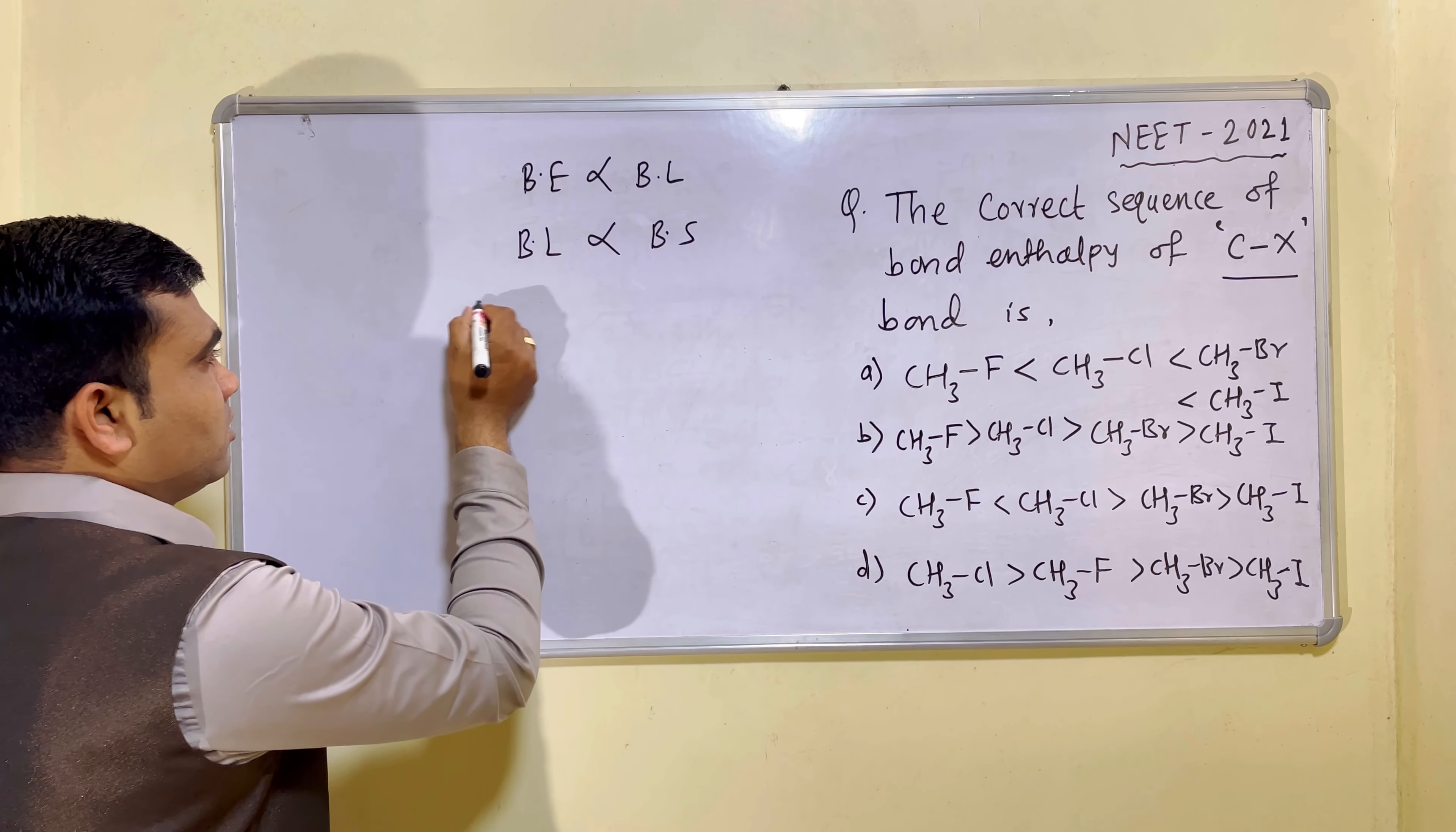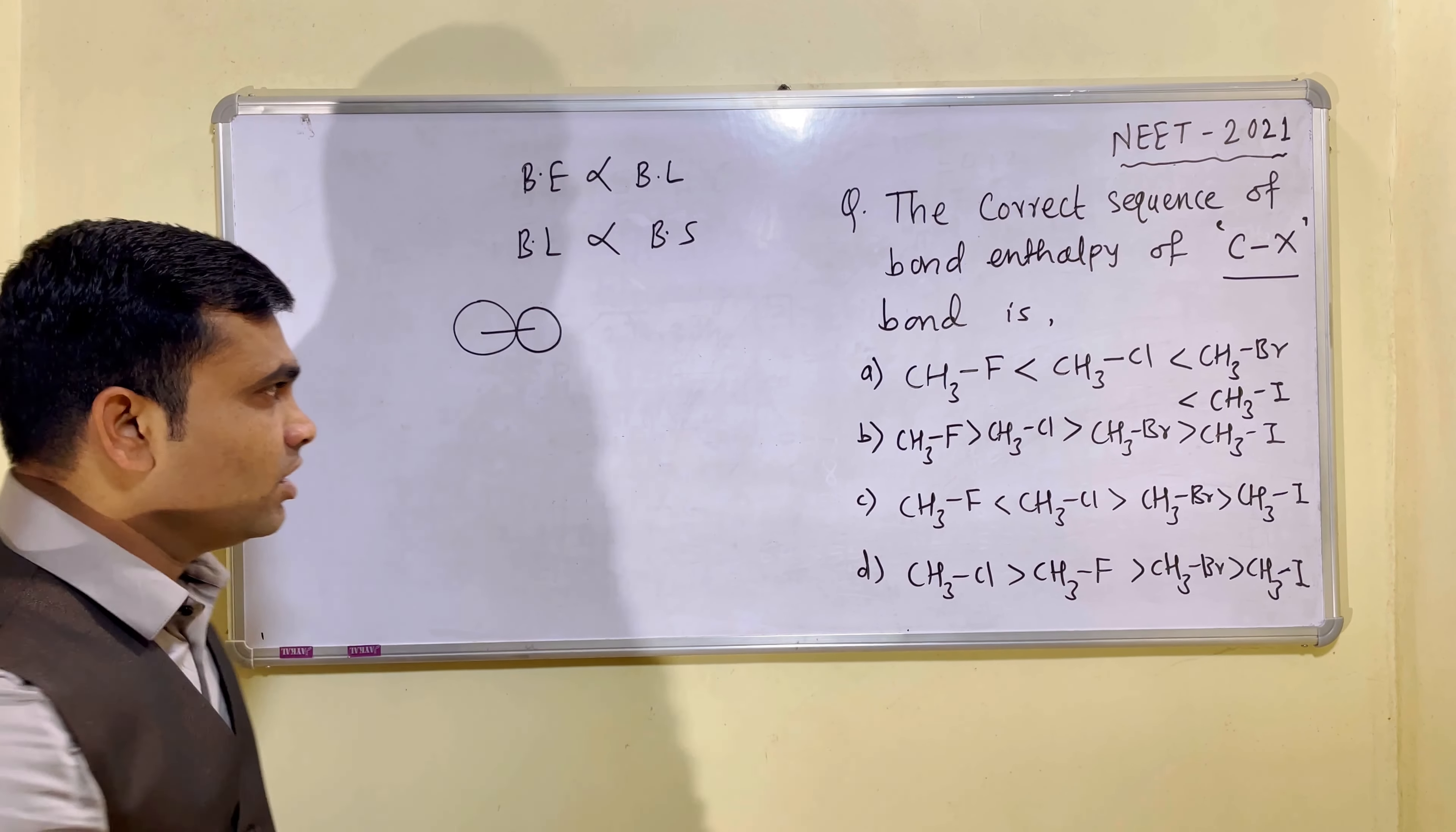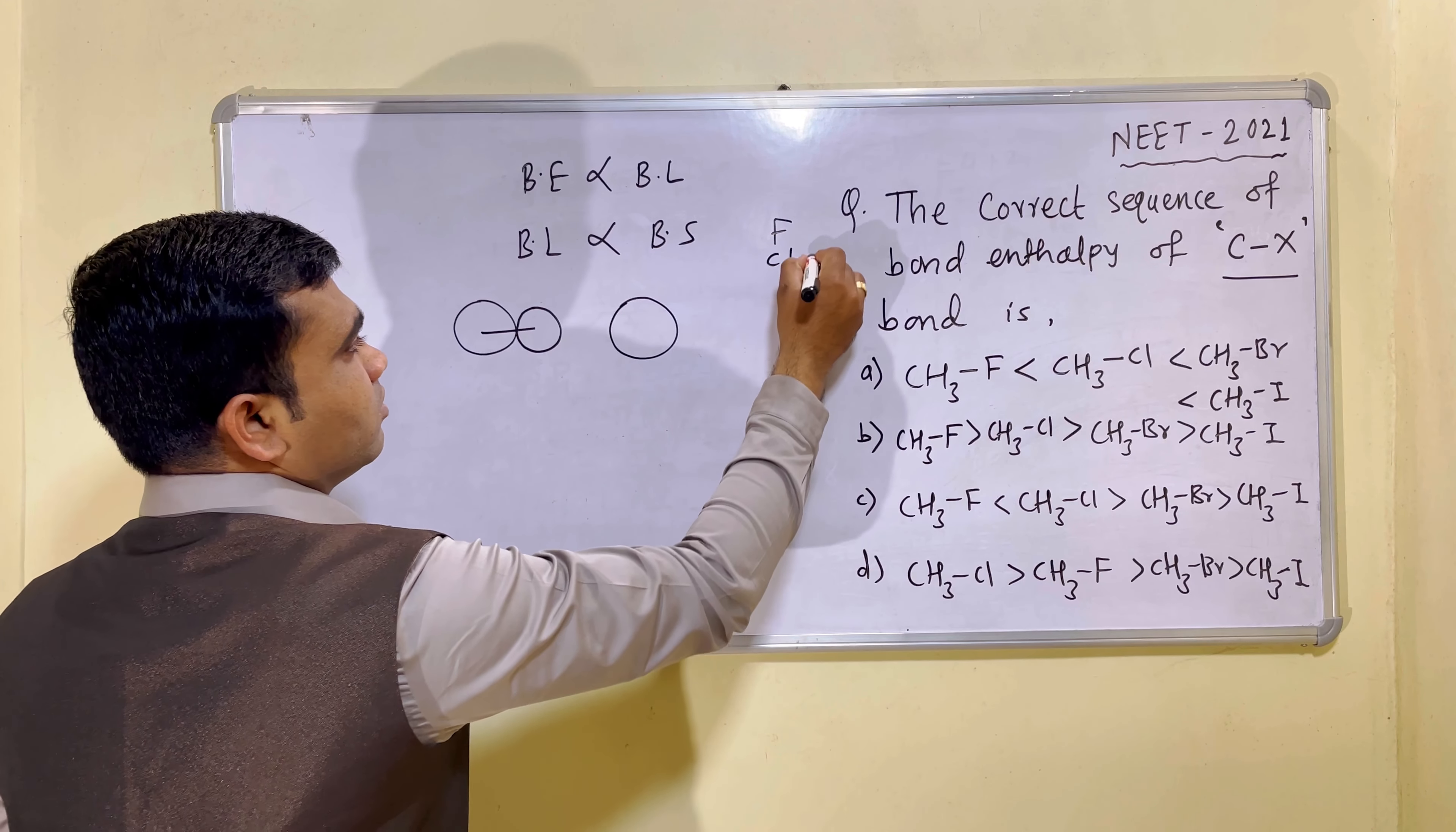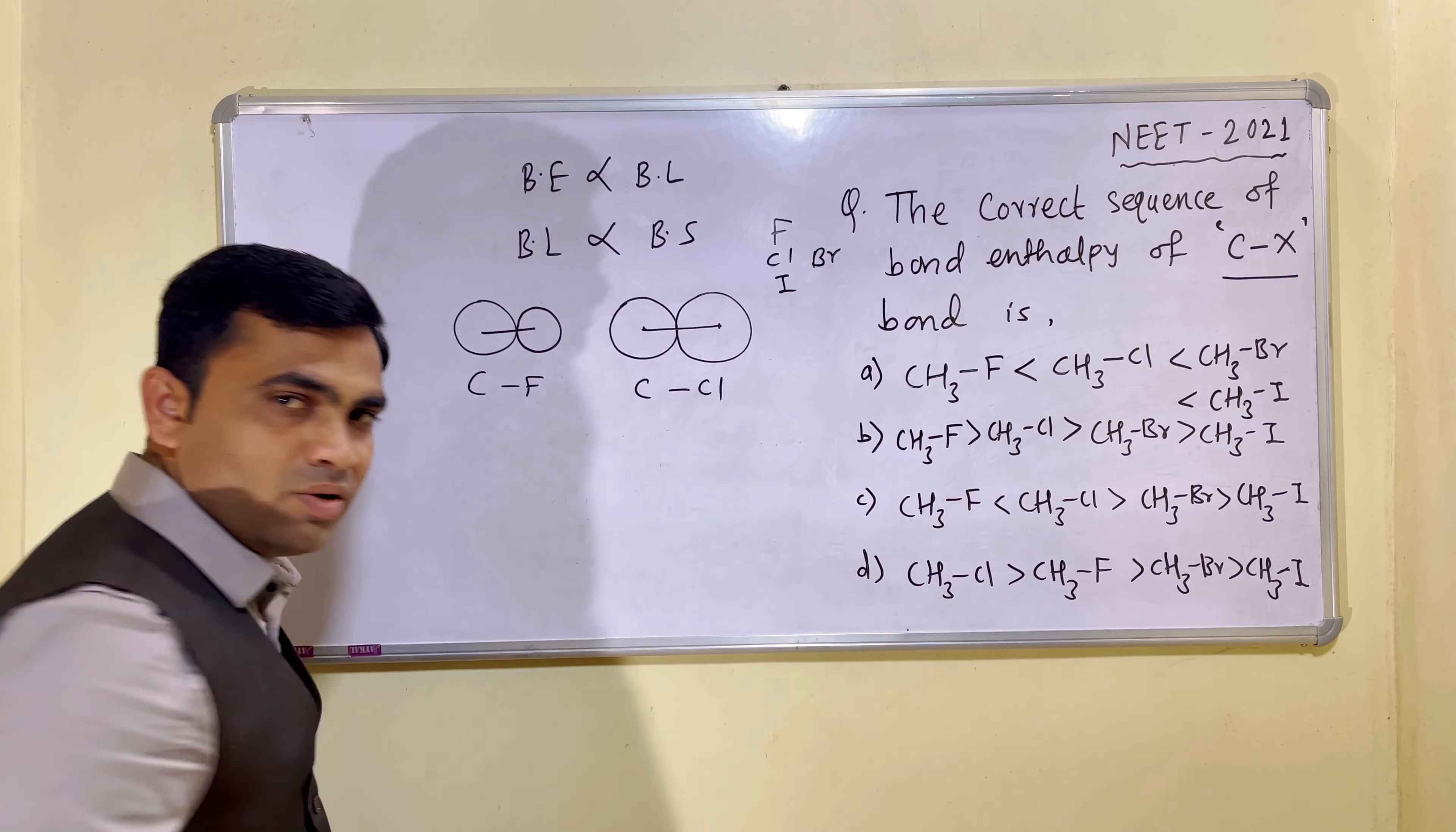See, if I consider this to be a size of carbon and this to be a size of fluorine, then this will be a bond length between carbon-fluorine bond. Now, if I consider, again, carbon, similar size and now we have chlorine. So among the given halogens, we have fluorine, chlorine, bromine and iodine. So this is carbon-fluorine bond. This is now carbon-chlorine bond, somewhat bigger in size. So carbon-chlorine bond.